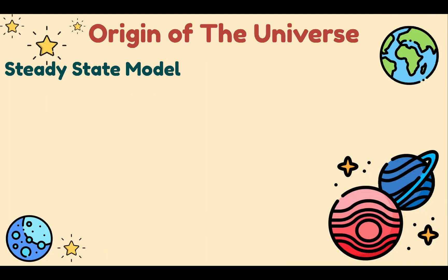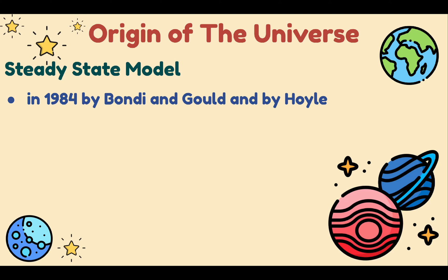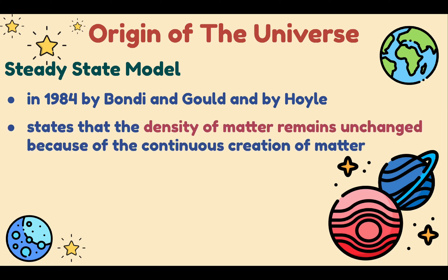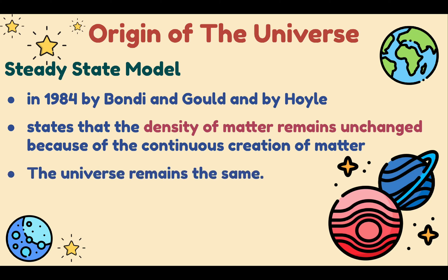The second model is the steady state model. The now-discredited steady state model was proposed in 1948 by Bondi and Gold and by Hoyle. It states that the density of matter remains unchanged because of the continuous creation of matter — meaning the observable universe essentially remains the same regardless of time or place. This contrasts sharply with the idea that most matter was created in a single event and has been expanding ever since. The model was eventually rejected with the discovery of the cosmic microwave background.